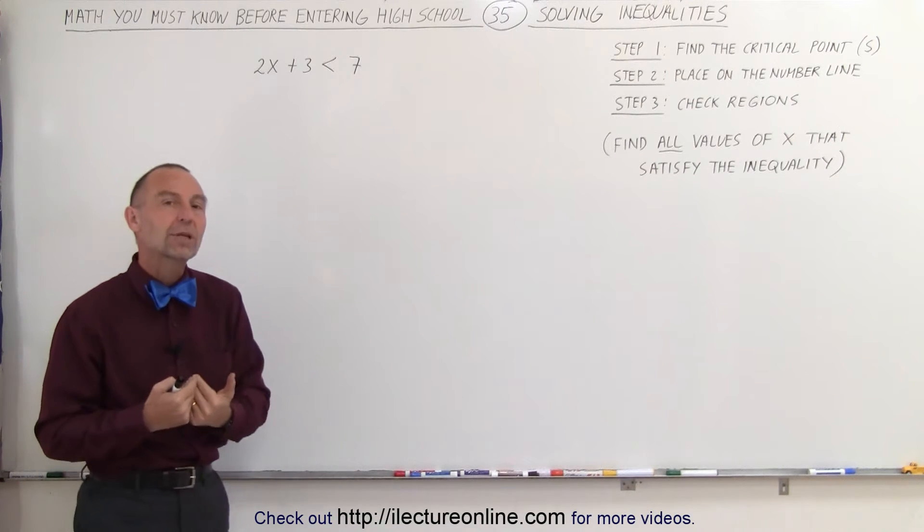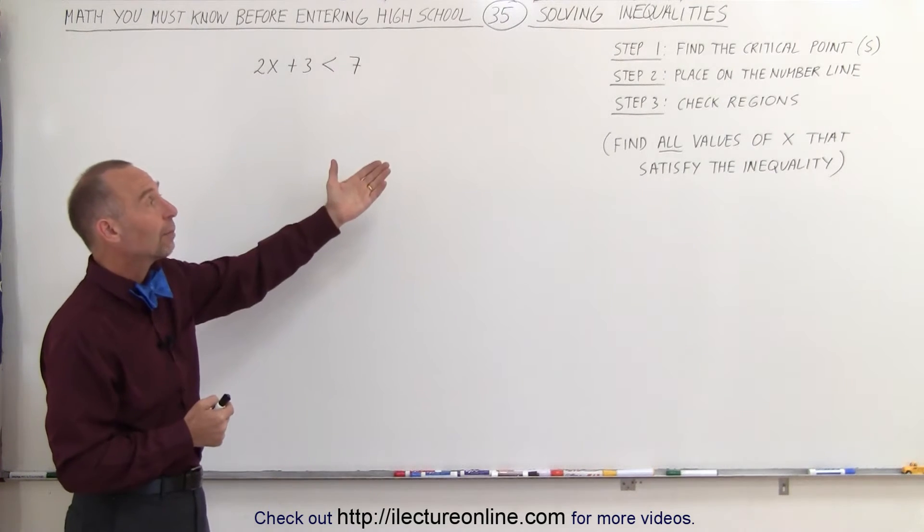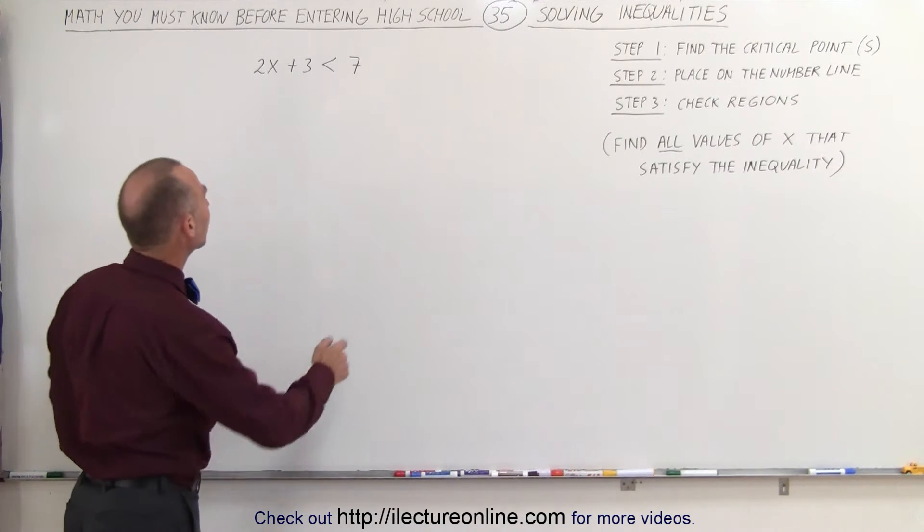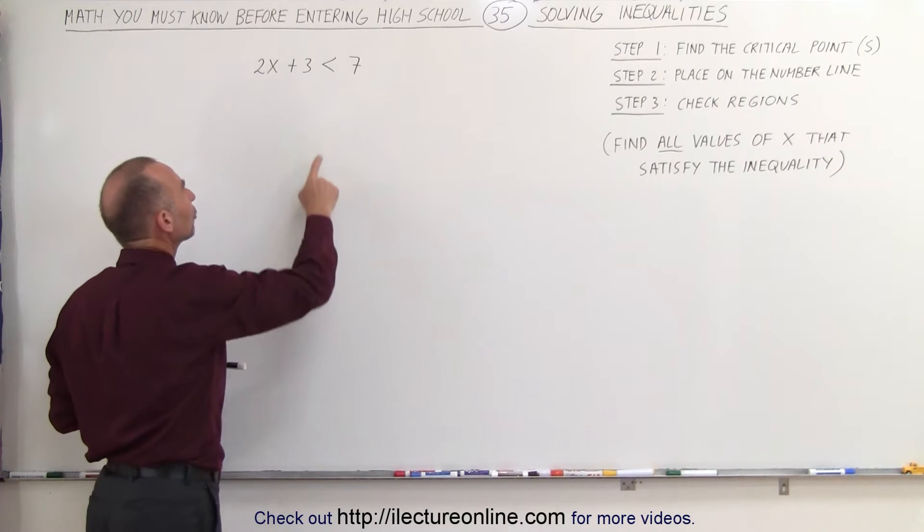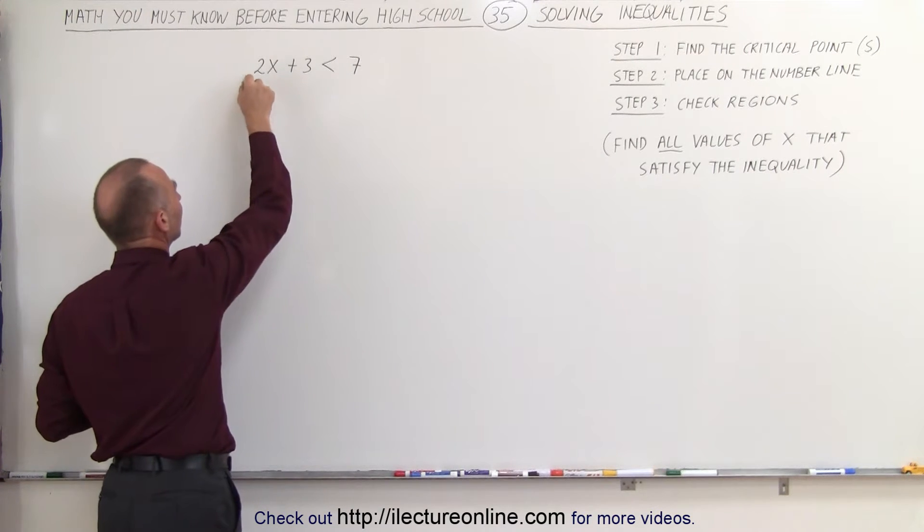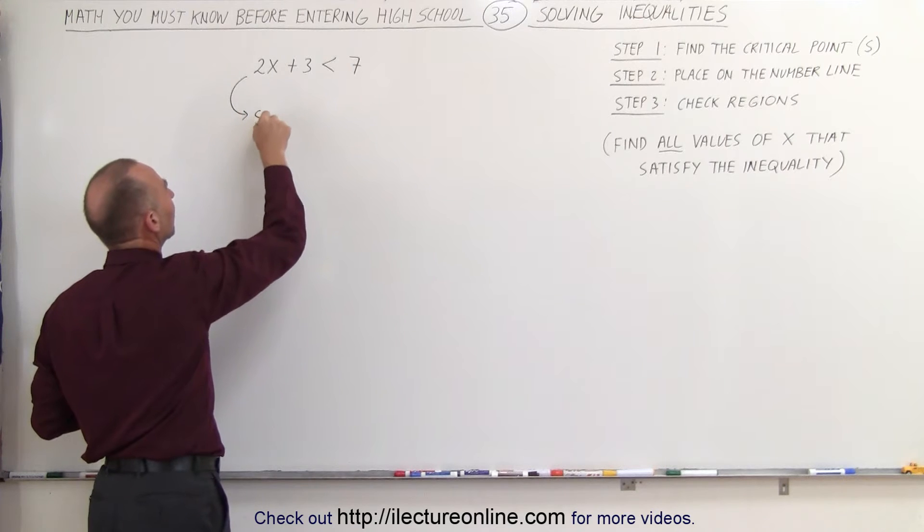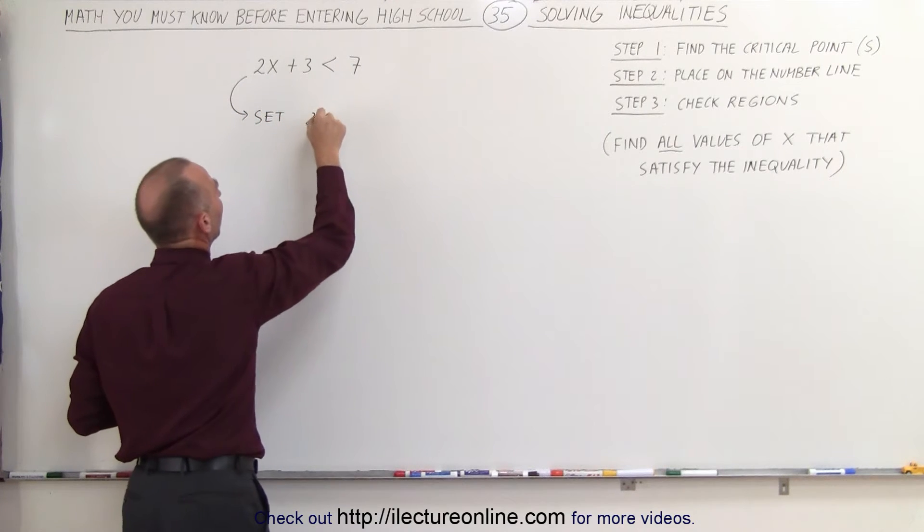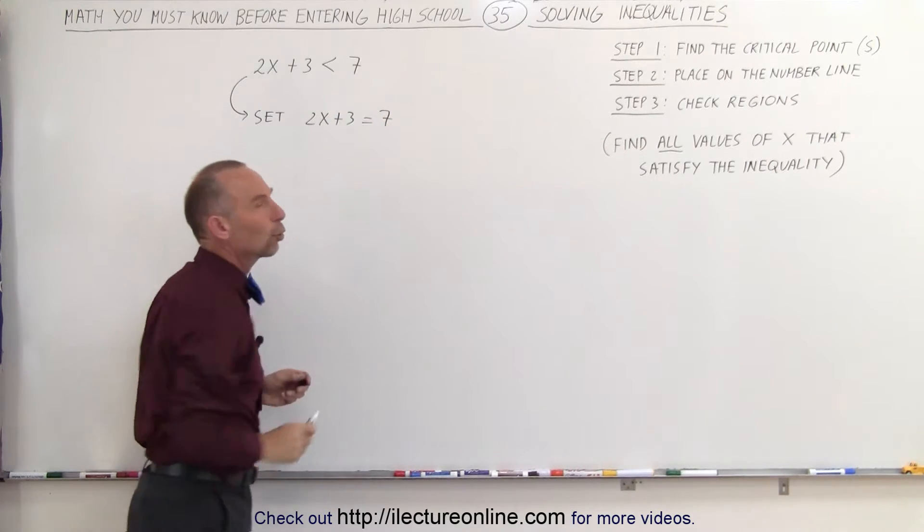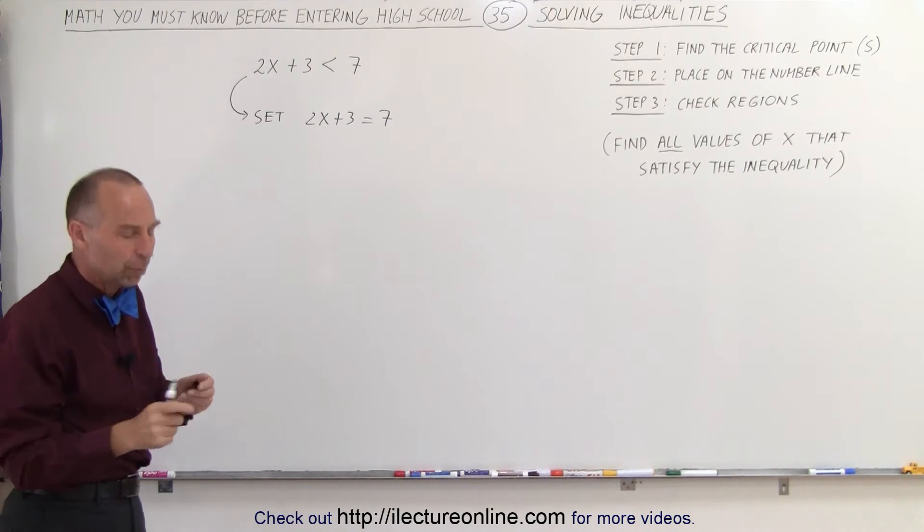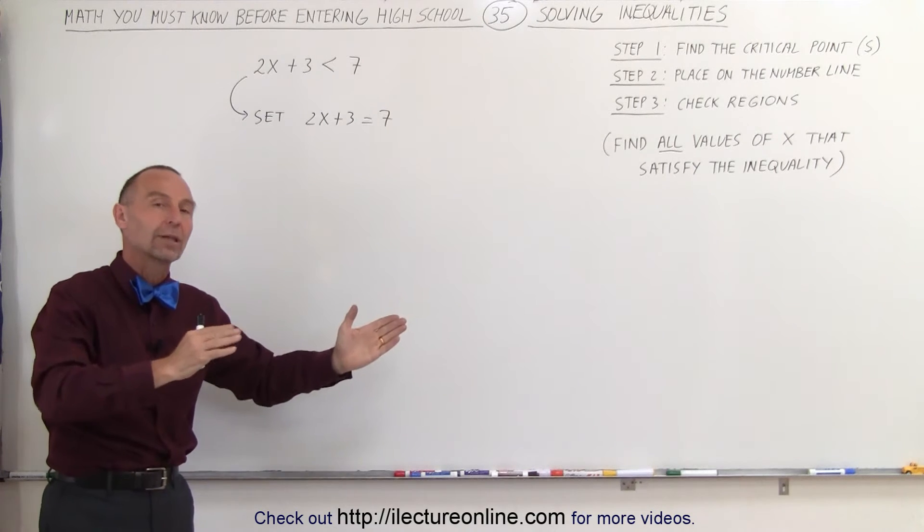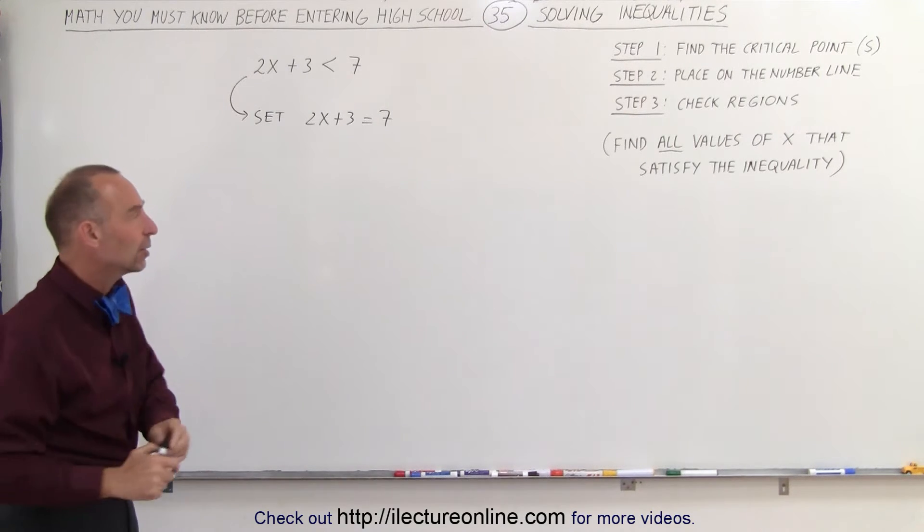So here are specific steps that we need to follow to do that. The first step is to find what we call the critical points. To do that, we're going to take our inequality and turn it into an equation by making the inequality sign into an equal sign. So we're going to set 2x plus 3 equal to 7 and solve that equation. That will give us the critical point, the dividing line between the region where x satisfies inequality and x does not satisfy inequality.